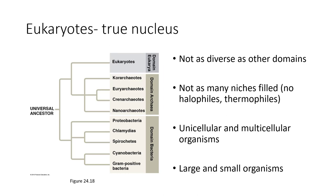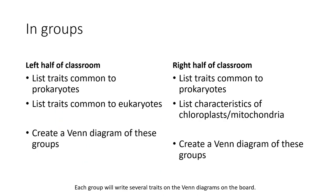Eukaryotes are the things that have a true nucleus. This is a group that is not as diverse as other domains. There are not as many niches filled. Eukaryotes don't have halophiles or thermophiles. There are both unicellular and multicellular eukaryotes — large ones and small ones.